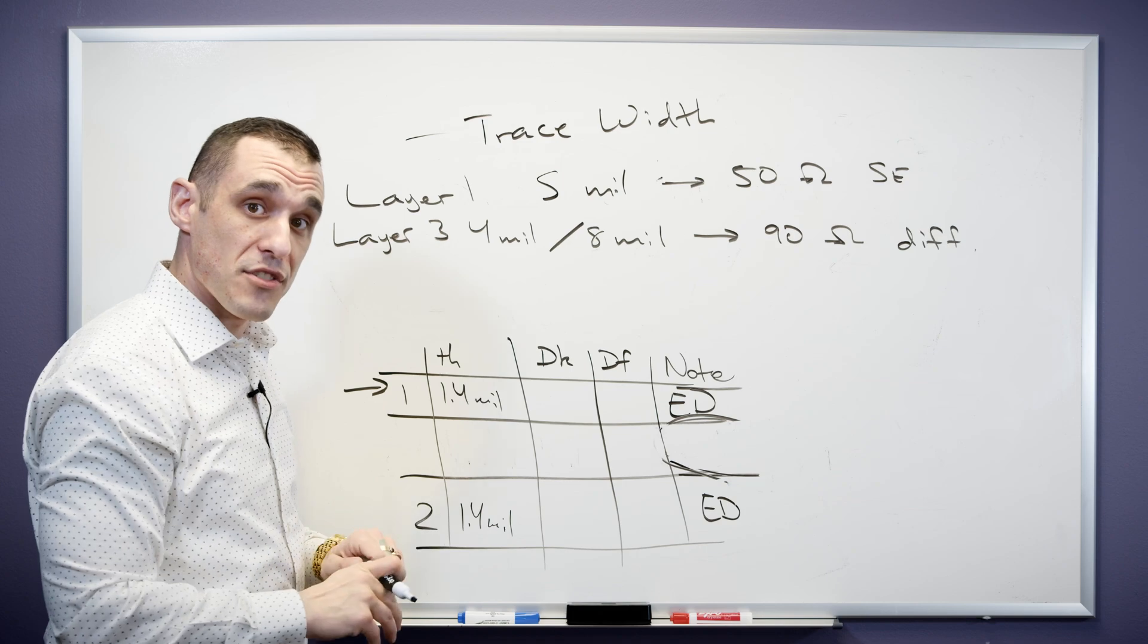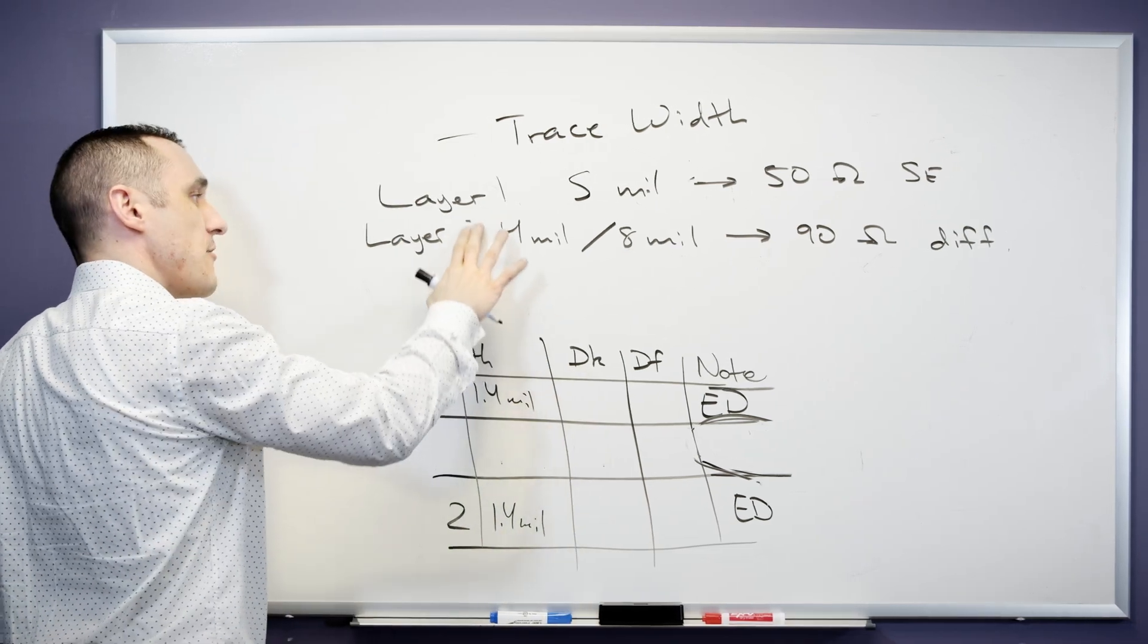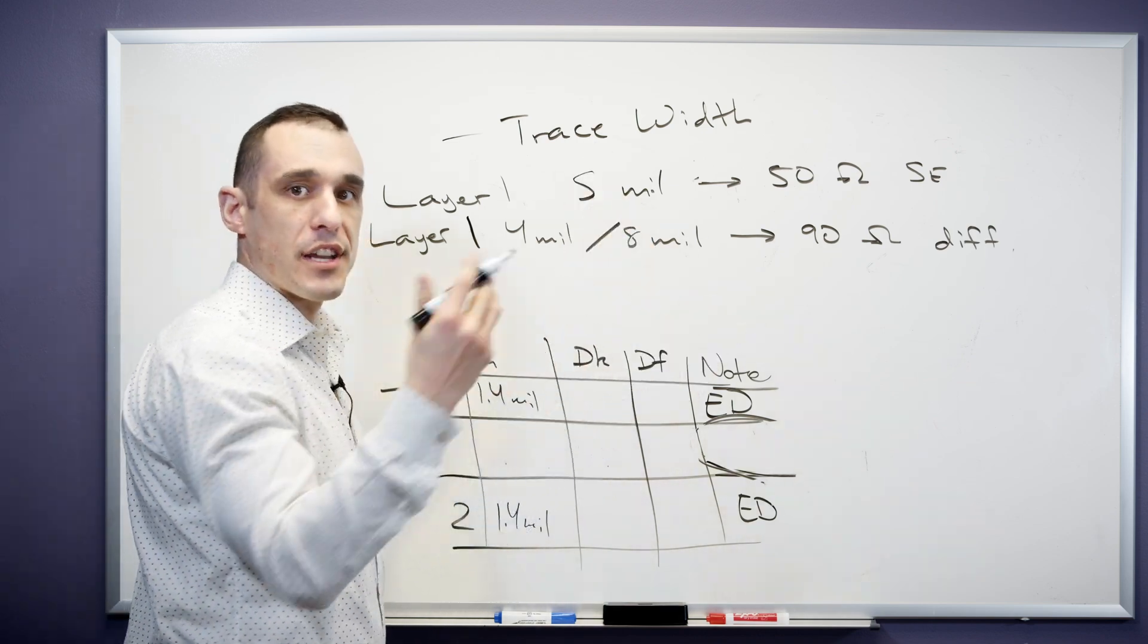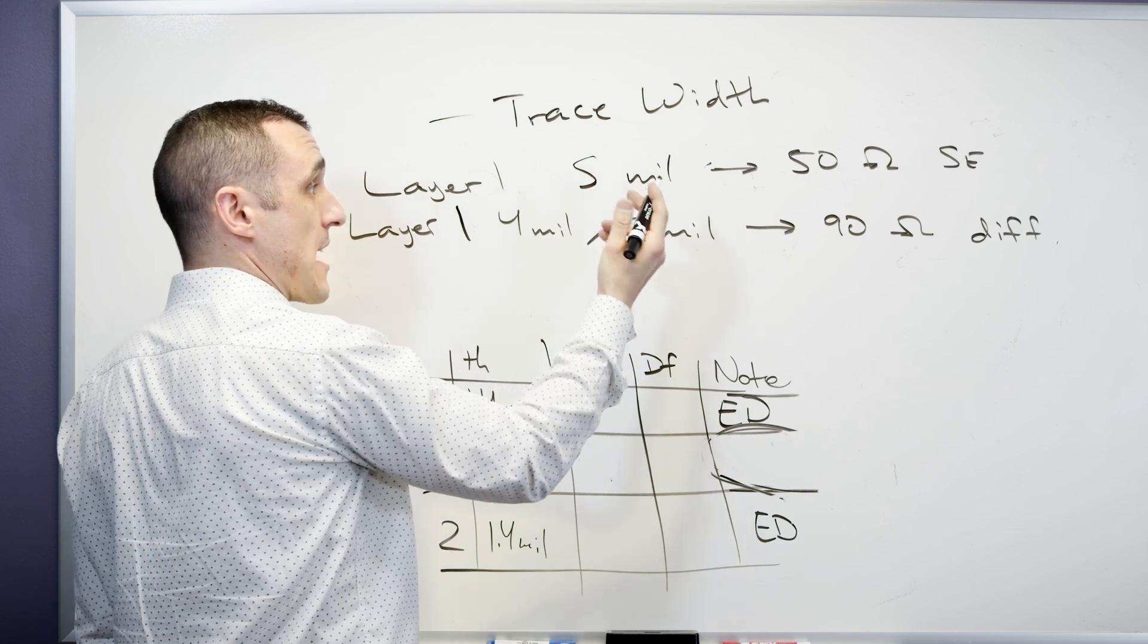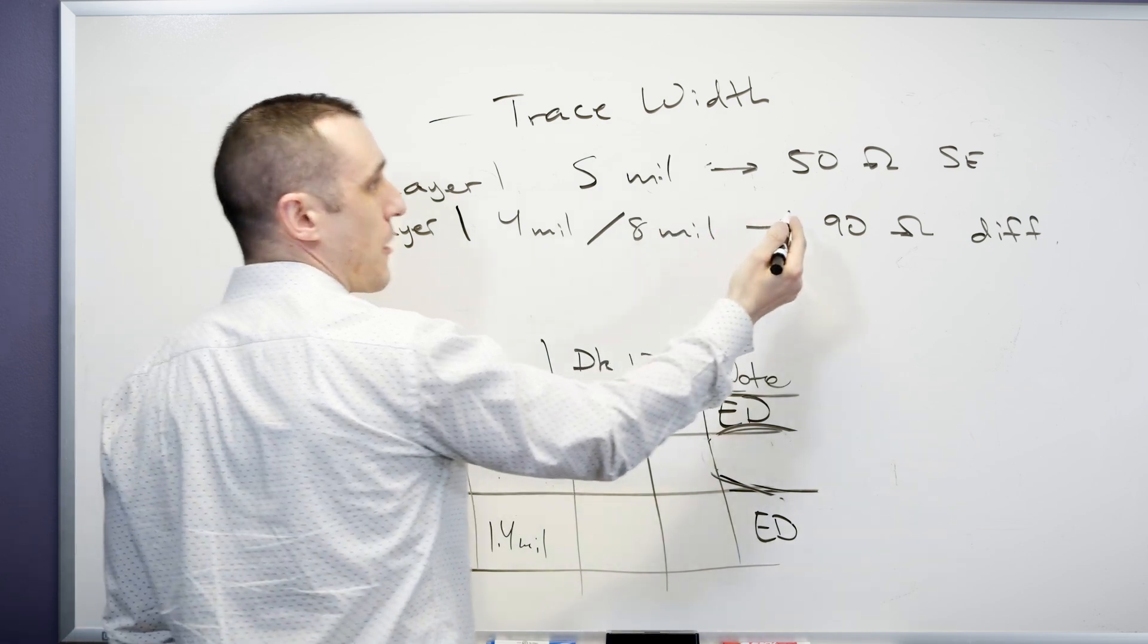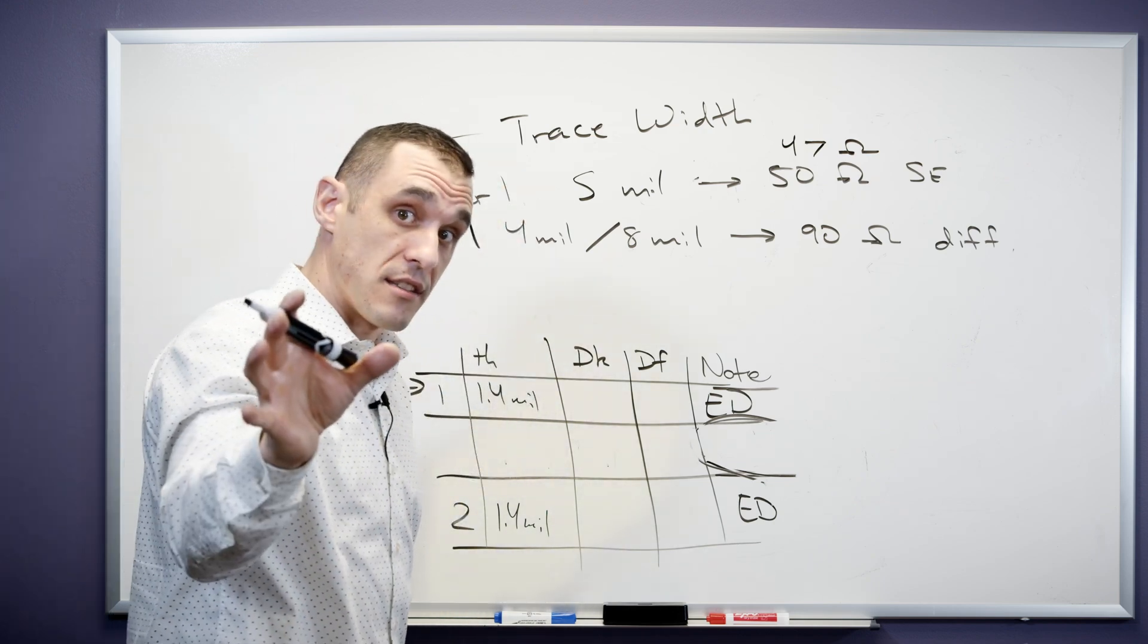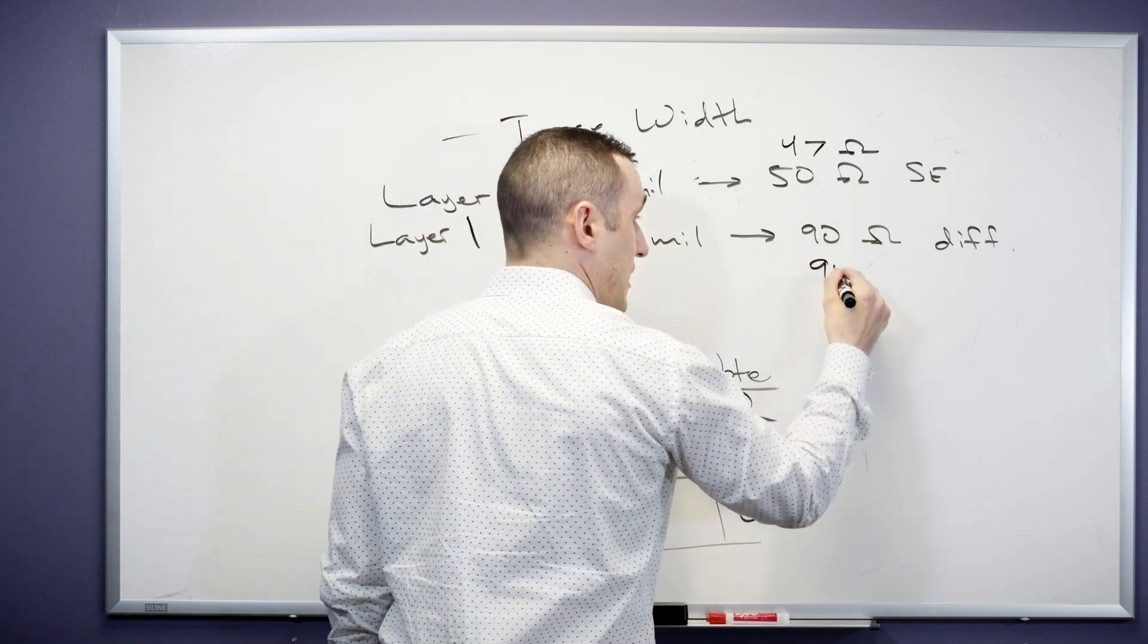Why did I break these two impedance profiles up onto different layers? It's because if I were to also set this on layer one, they might not be able to hit both of these requirements exactly for a given layer thickness and dielectric constant. They might be able to get pretty close. So for example, the five mil that you design into the board may not come out to 50 ohms. Maybe it comes out to 47 ohms. Simultaneously on that same layer, maybe that four mil, eight mil that you actually design into the PCB layout doesn't come out to 90 ohms differential. Maybe it comes out to 94 ohms differential.